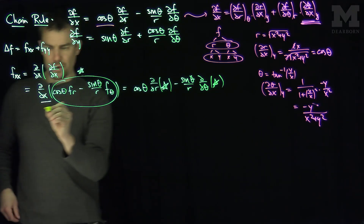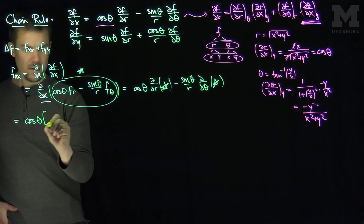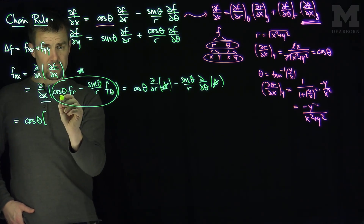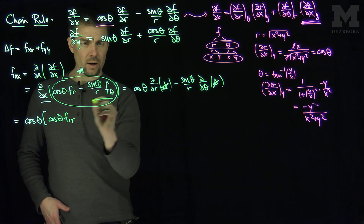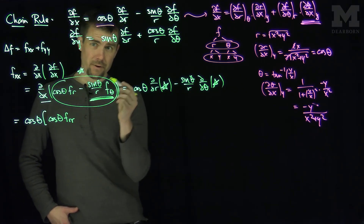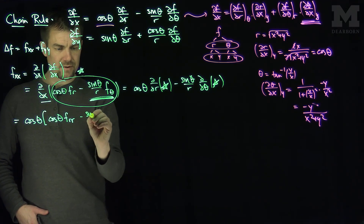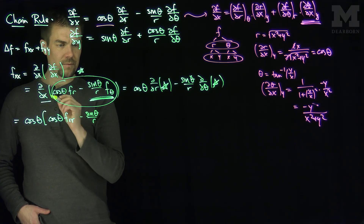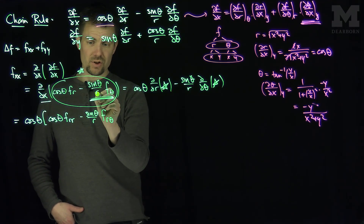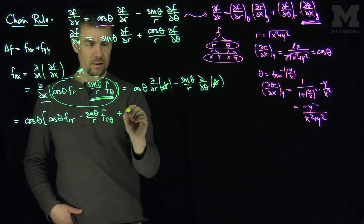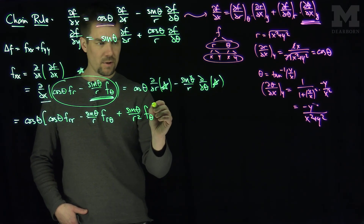Taking the r-derivative of star: we get cosθ · frr from the first term. For the second term, using the product rule, the r-derivative of (−sinθ/r)·fθ gives (−sinθ/r)·frθ plus (sinθ/r²)·fθ. Multiplying everything by the outer cosθ gives the r-derivative portion of fxx.